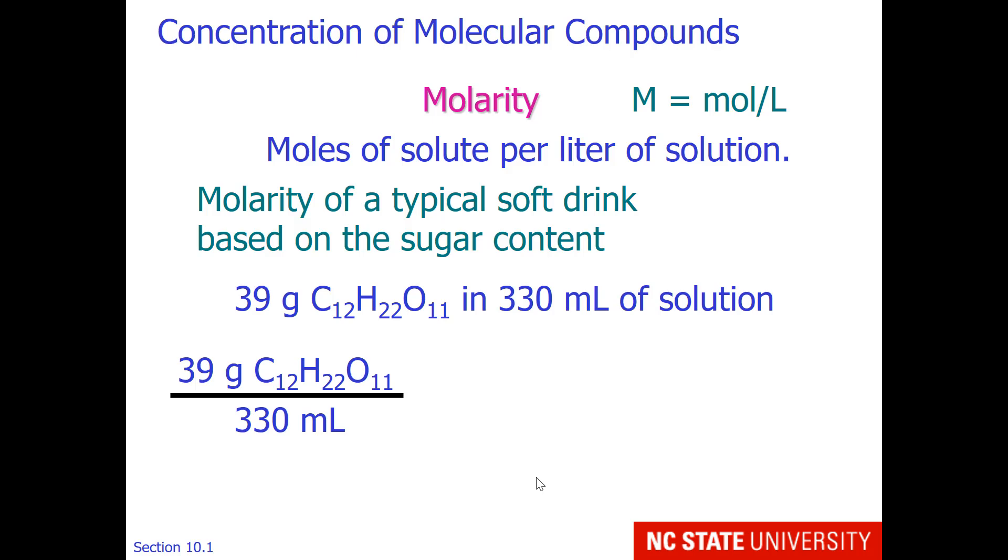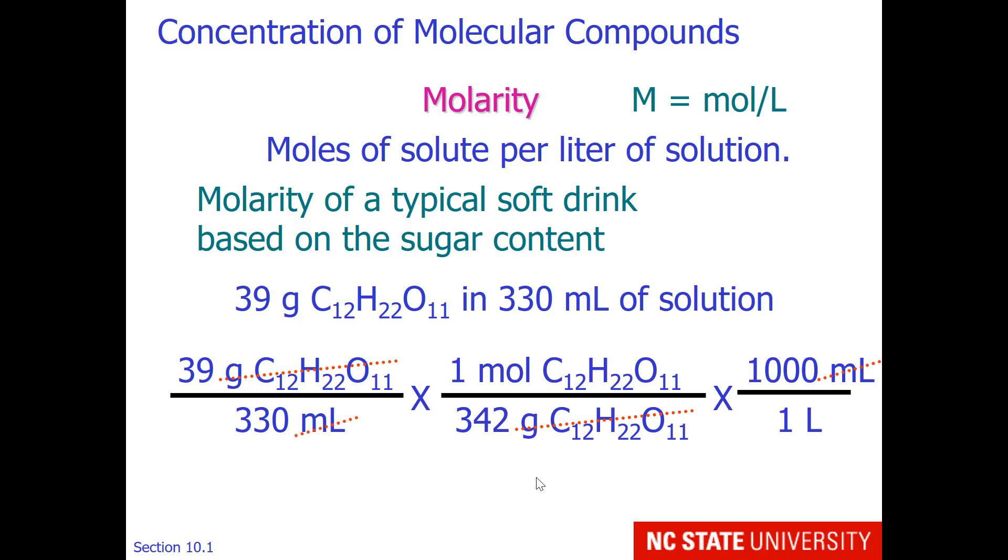Grams are on top and milliliters are on the bottom. To get rid of grams, we'll divide by the molar mass. That will cancel out our grams of sugar. To get from milliliters to liters, we'll need to use this conversion factor with 1,000 milliliters on top and 1 liter on the bottom. Milliliters will cancel out.